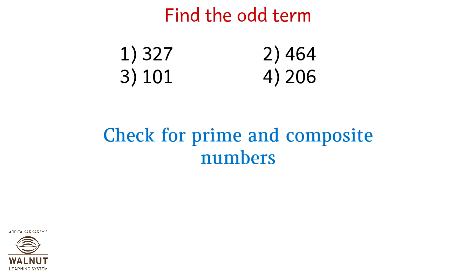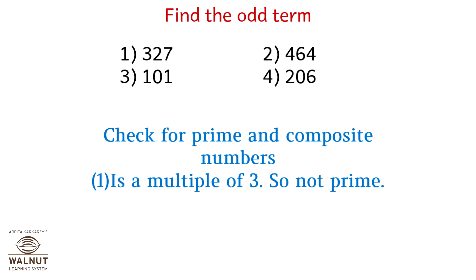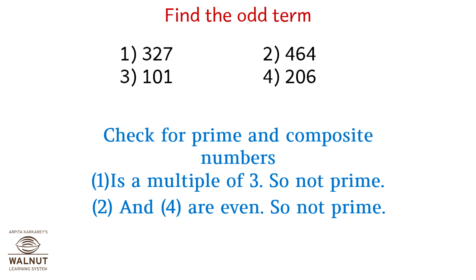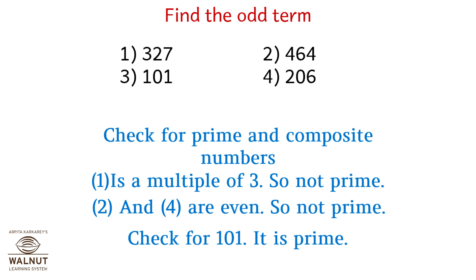Check for prime and composite numbers. One is a multiple of three, so not prime. Two and four are even, so not prime. Check 101 — yes, it is prime. The correct answer is option 3.